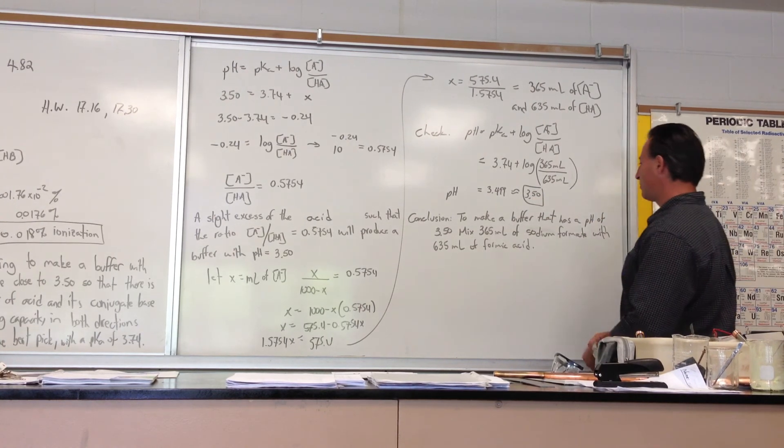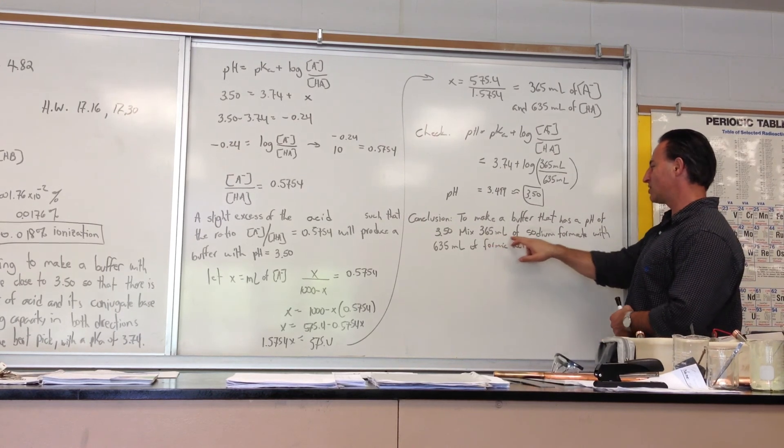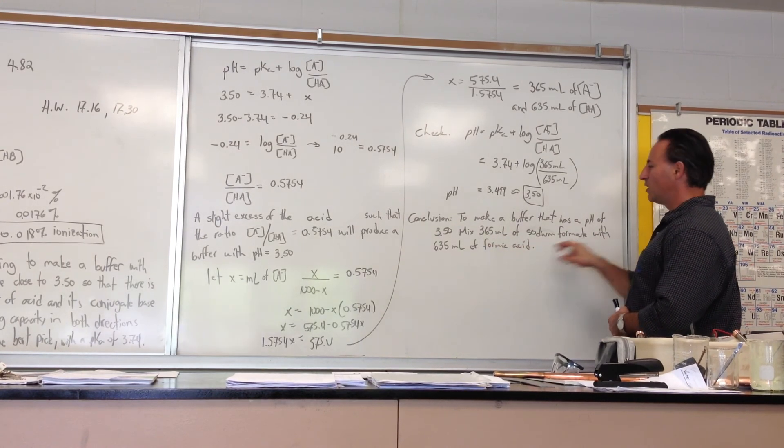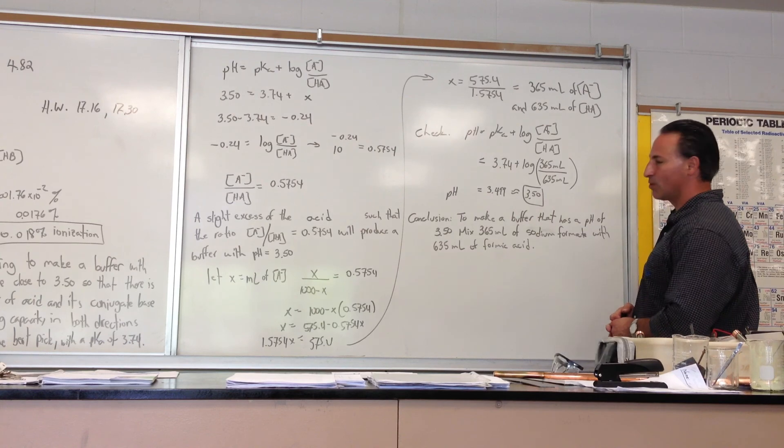So in conclusion, to make a buffer that has a pH of 3.5, mix 365 milliliters of sodium formate with 635 milliliters of formic acid.